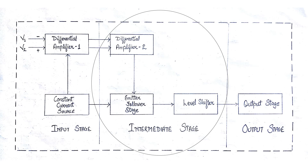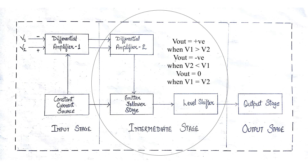The level shifting circuit enables an amplifier to have two differential inputs with a single output. Vout is positive when V1 is greater than V2, Vout is negative when V2 is less than V1, and Vout is equal to zero when V1 is equal to V2.